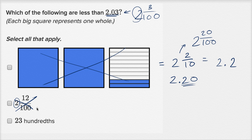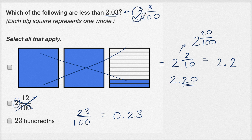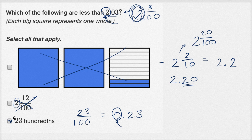Now what about 23 hundredths? You might be tempted to say 23 hundredths is bigger than 3 hundredths. But remember, the comparison number has two wholes, while 23 hundredths has no wholes — nothing in the ones place. When you look at the ones place, you have two ones there and zero ones here. It doesn't matter how many hundredths you have if you have less than a hundred hundredths. So this one is for sure less than 2.03 — it's significantly less than even one. This is the only one of the three that is less than 2.03.